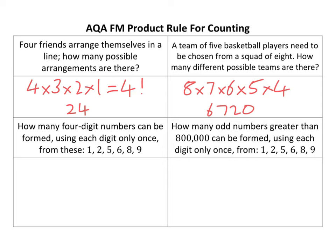How many four-digit numbers can be formed using each digit? It's essentially a very similar question. I've got six numbers, so I've got six choices, then five, then four, then three — there are four numbers there. Stick that in the calculator: 360.